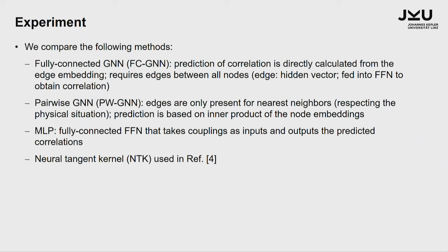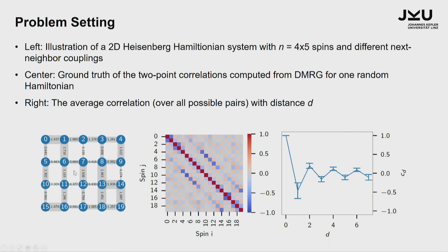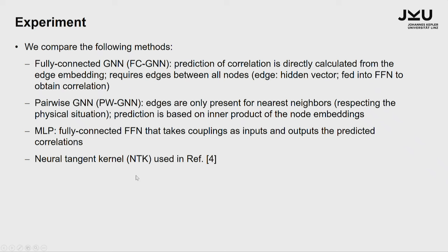Then we took the very physically motivated so-called pairwise GNN, where the edges only are present for the nearest neighbors. Now our graph neural network looks exactly like the spin lattice — five by four, with only nearest neighbors coupled. But how do we get the correlation from node five to ten if this is not connected in the graph? The answer is: you compute the correlation prediction based on the inner product of the node embeddings. In every node there's a big embedding space — a huge spin larger than the real physical spin — and the spins are learned such that the inner products lead to the two-point correlation. We also compare this to an MLP and a neural tangent kernel, which were done before.